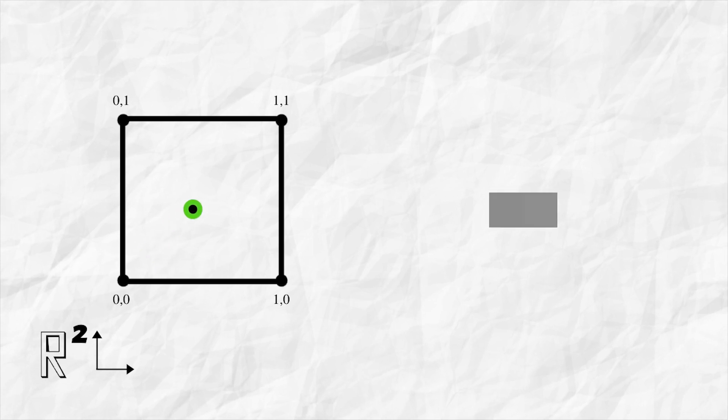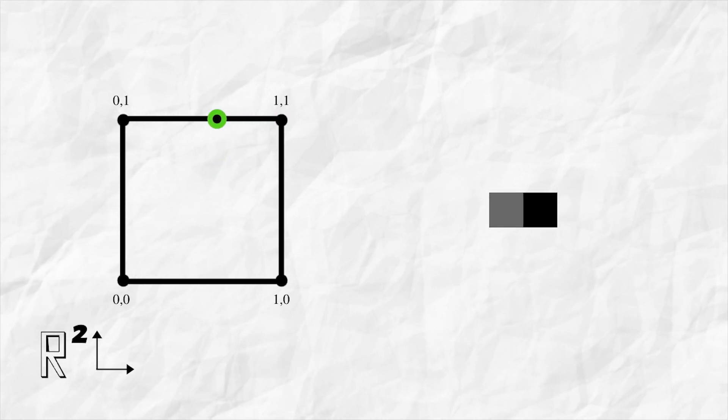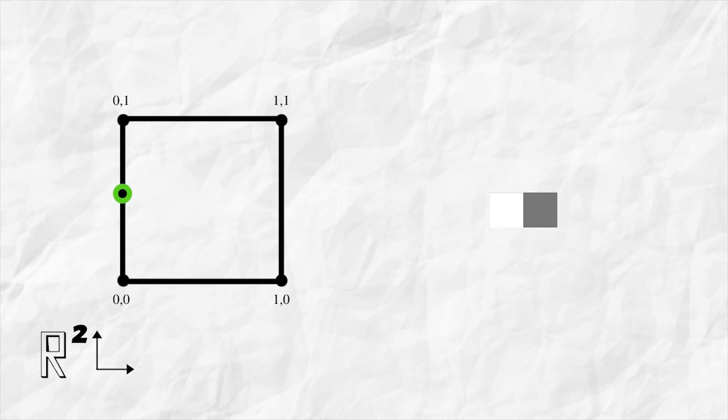As we travel from 0 to 1, this box here turns black. When we are in 2 dimensions, we have 2 boxes to denote the position in this unit square. One box for the x coordinate and one box for the y.